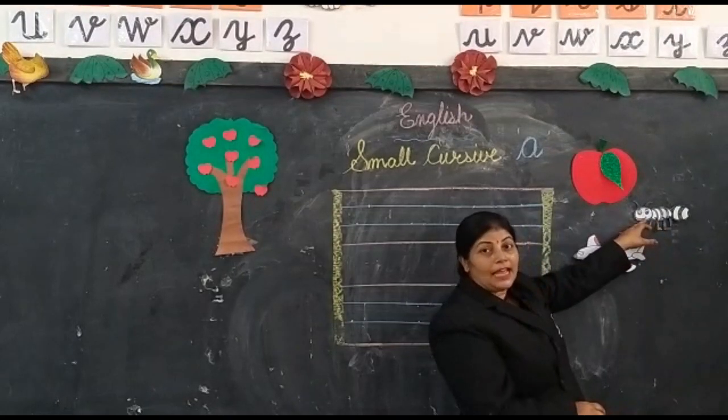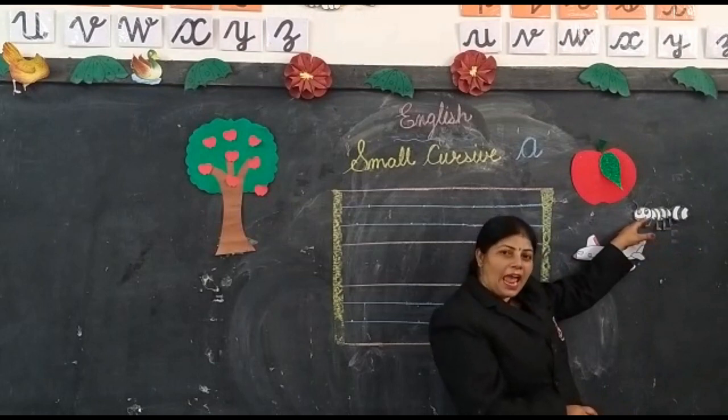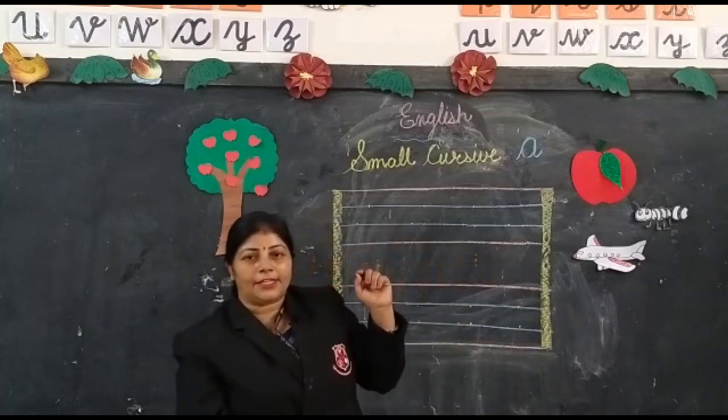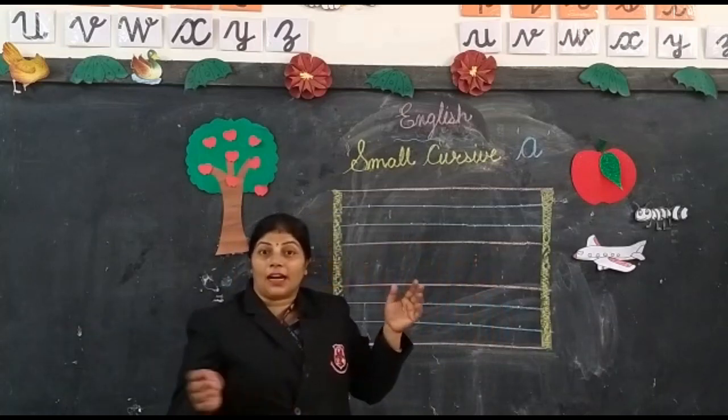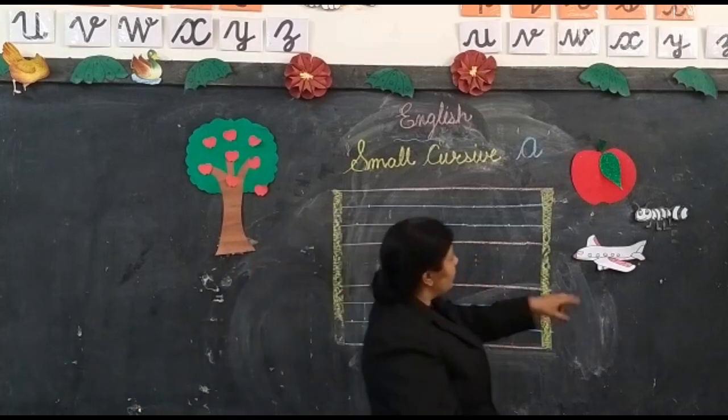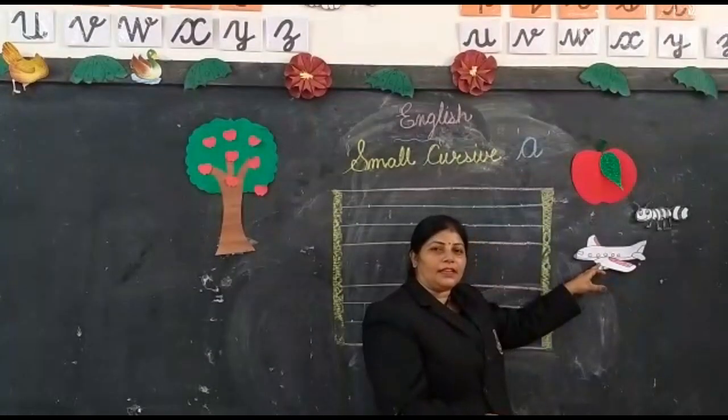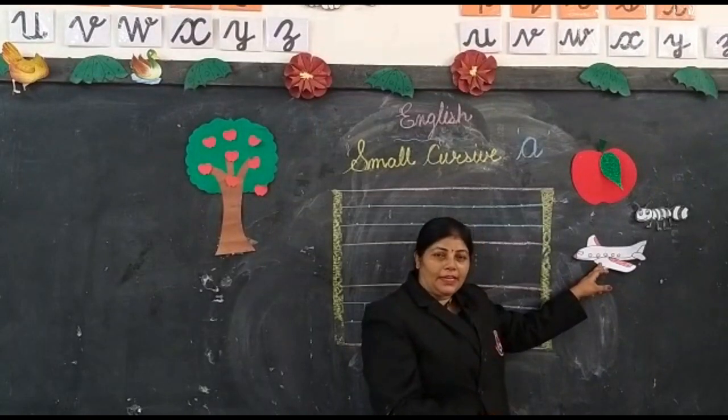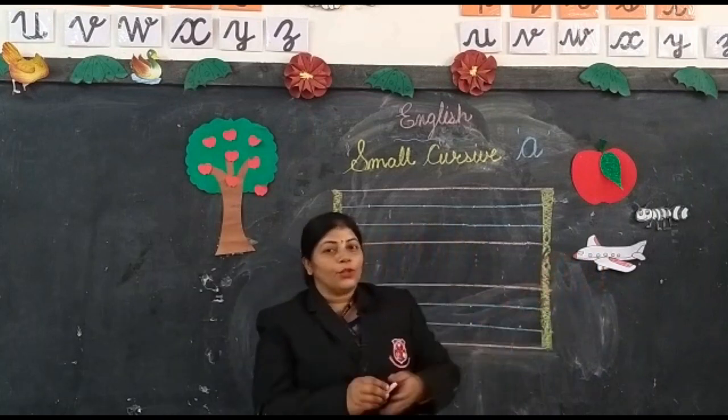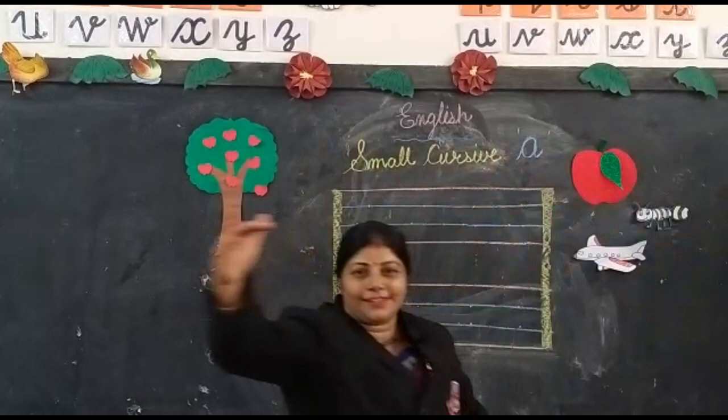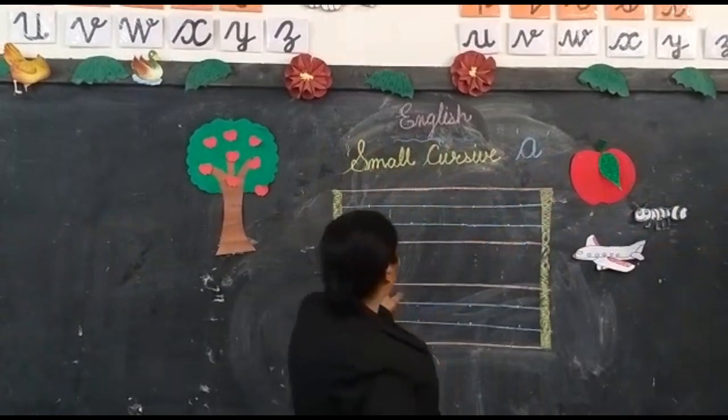Let's move on another picture. This is an ant. Where do you see ant? Yes, at your home and in the garden there are so many ants. Now what is this? This is an aeroplane. Where do you see aeroplane? In the sky.